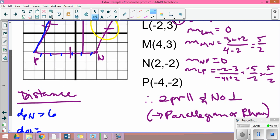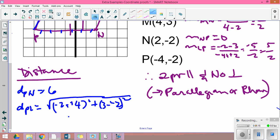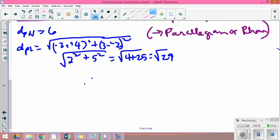Now if I do the distance from P to L, I have the distance formula: -2 minus -4 quantity squared plus 3 minus -2 quantity squared. Minus a minus is plus, so I have 2 squared plus 5 squared, still under the square root: 4 plus 25, which is the square root of 29, definitely not the same thing as 6.